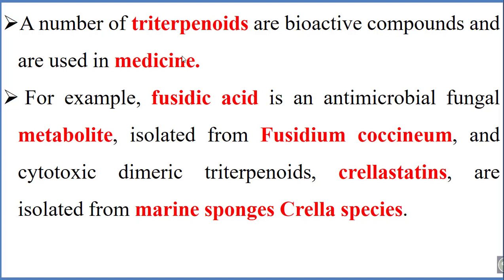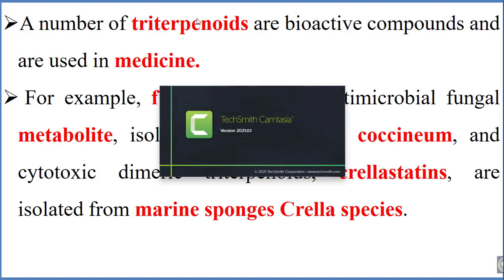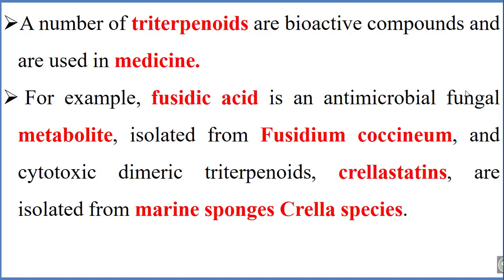Triterpenoids are a major source for synthesizing medicinal and pharmaceutical drugs. For example, phosidic acid is an antimicrobial and antifungal metabolite isolated from Phosidium ocidium plants. Krillustatin is a cytotoxic dimeric triterpenoid isolated from marine sponges of the Sterilla species.